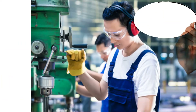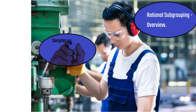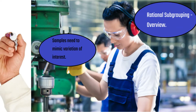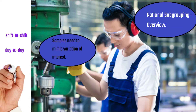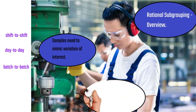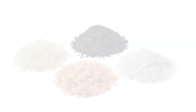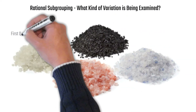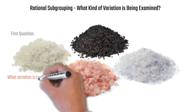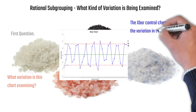Let's start with an overview of rational subgrouping. Your sampling and subgrouping should mimic the variation you're interested in. Am I interested in shift-to-shift variation, day-to-day, hour-to-hour, month-to-month, batch-to-batch? A control chart is going to tell you if the variation from subgroup to subgroup is the same. So what kind of variation is being examined? That's the first question you want to ask when you look at a control chart.